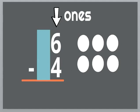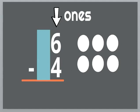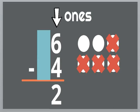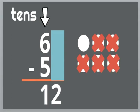Six minus four equals two. Now let's go to the tenths column. Ahora vamos a la columna de las decenas. Six minus five equals one.